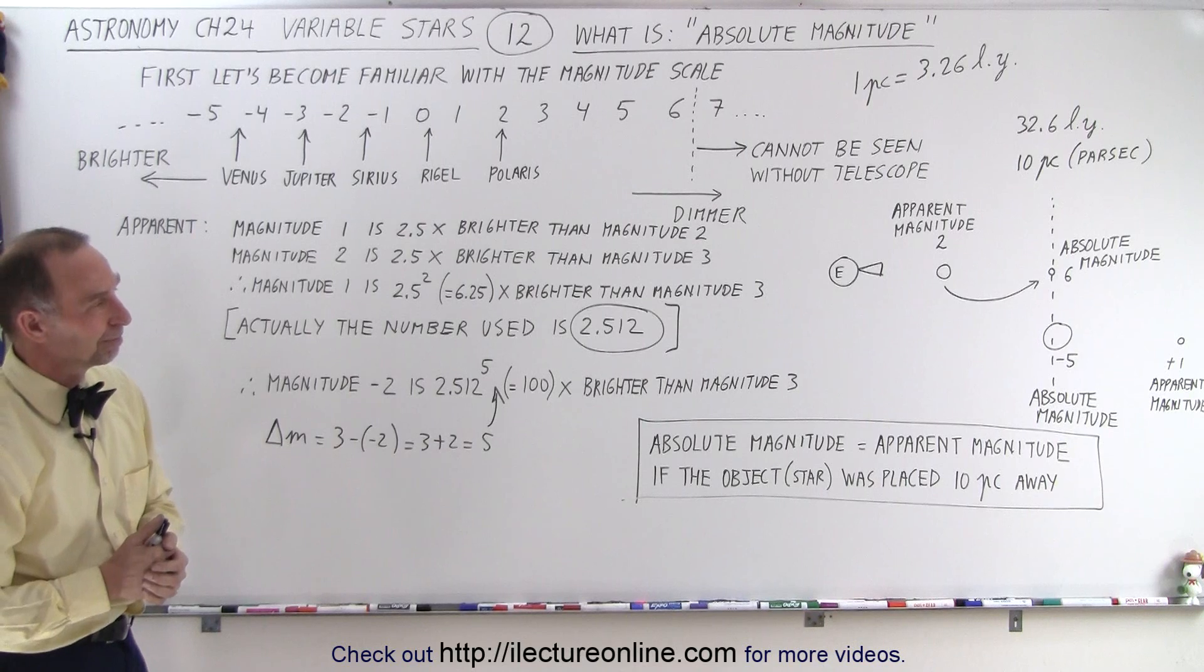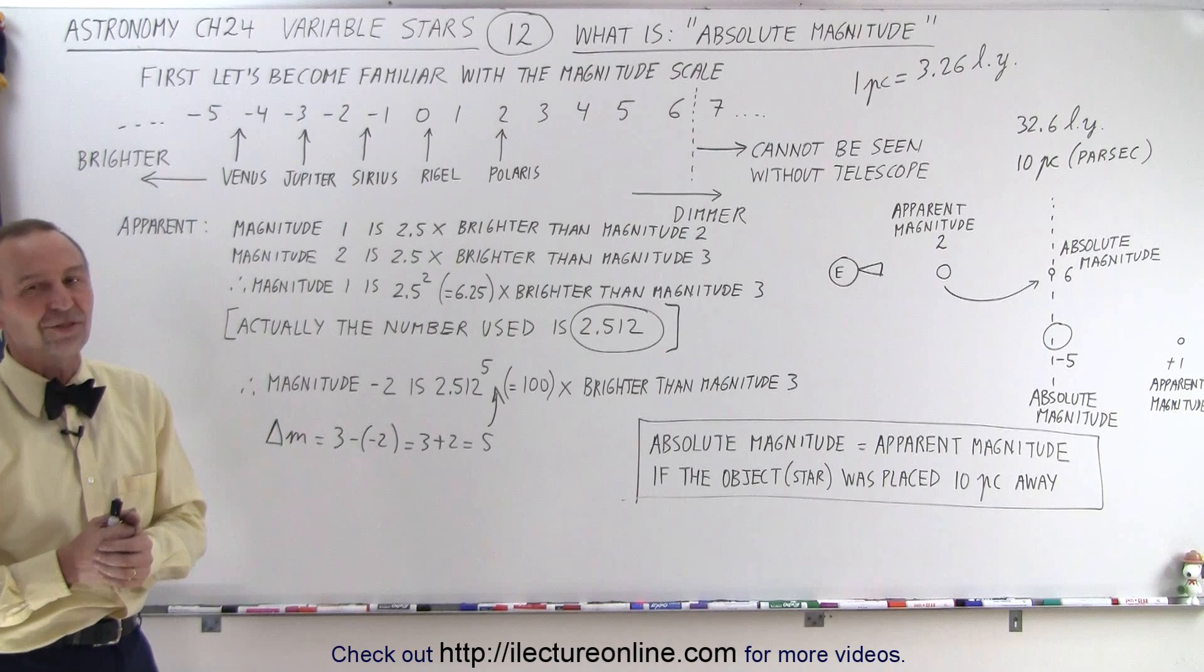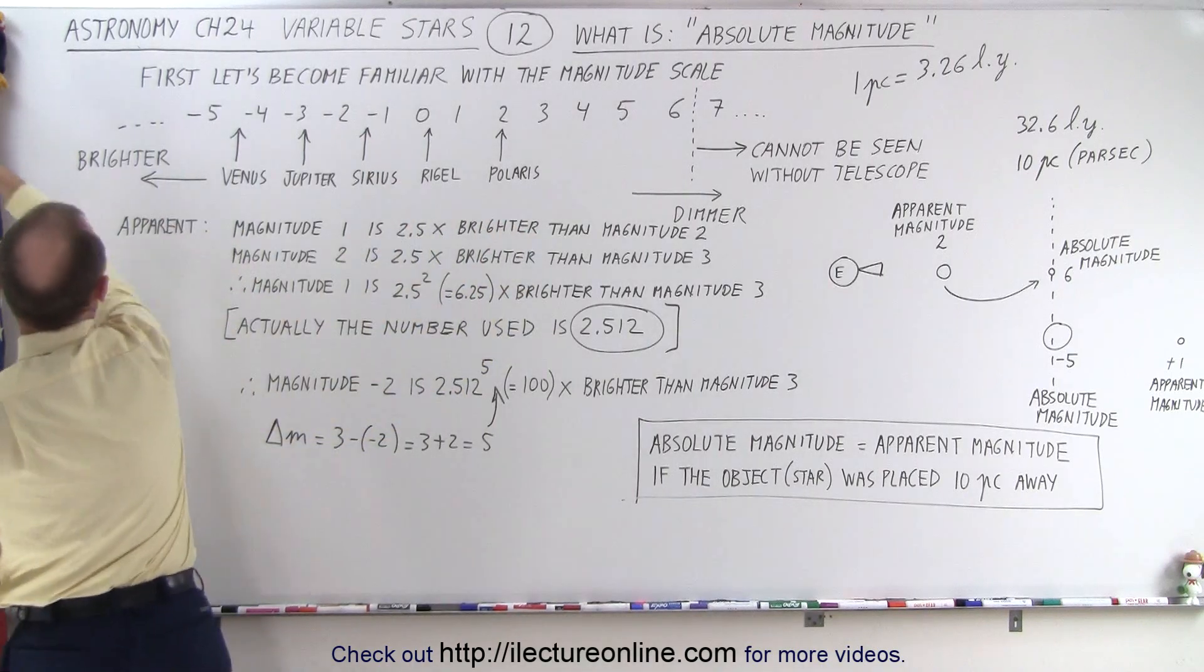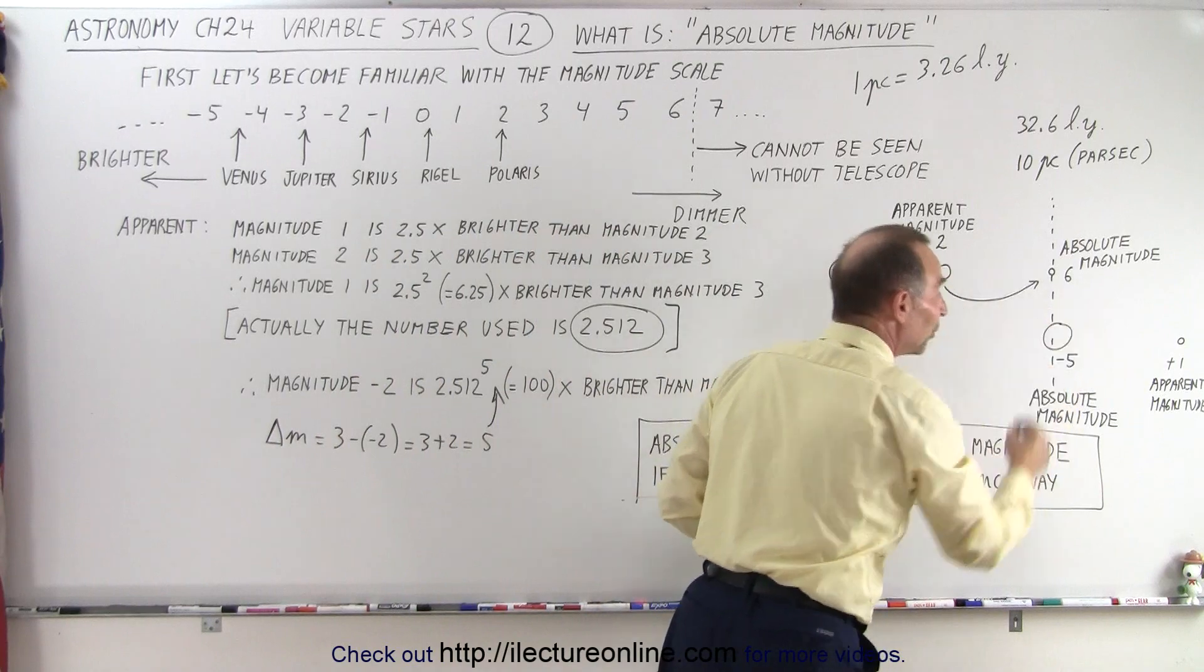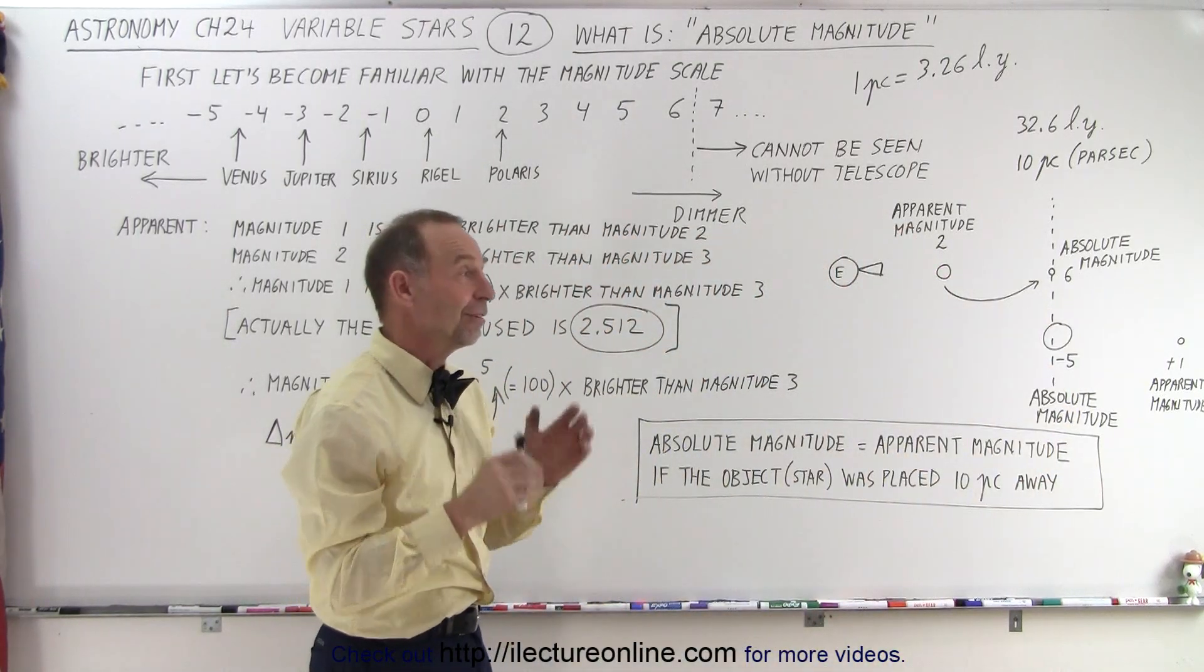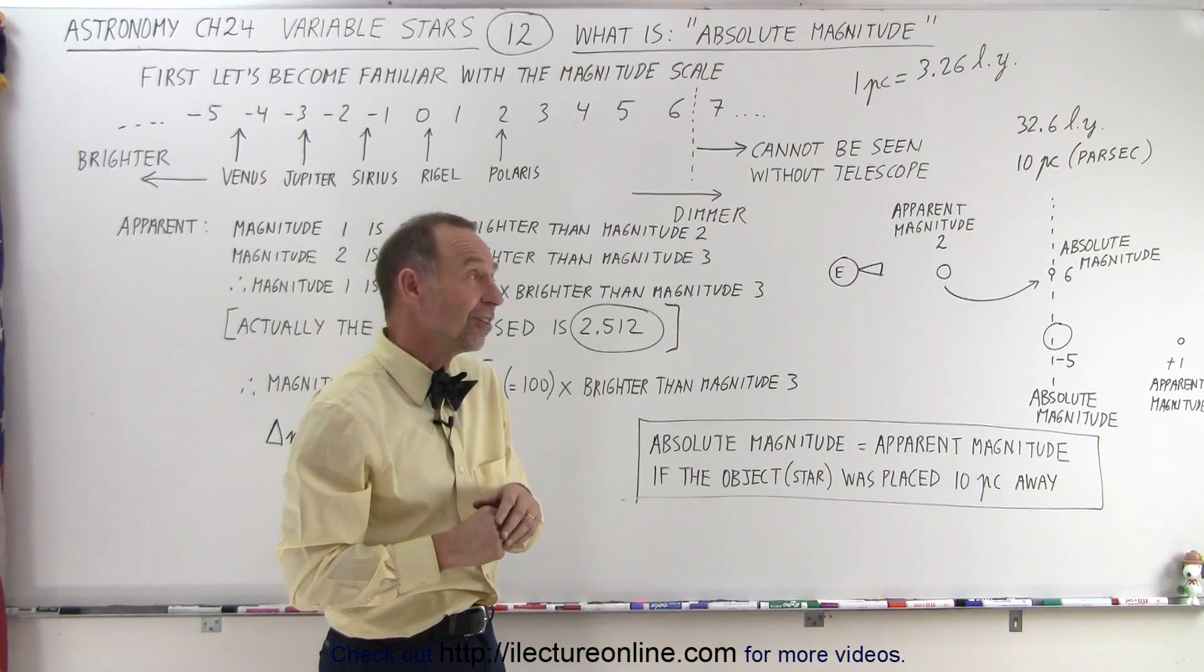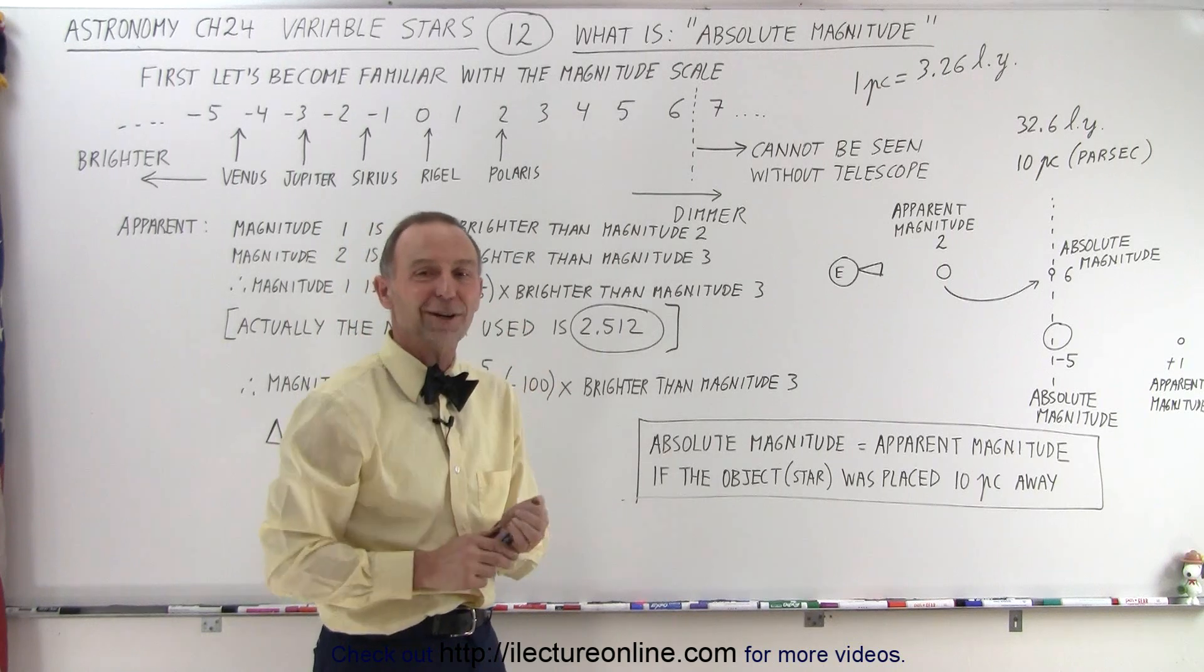What would the sun be? The sun's apparent magnitude is a minus 26 and a half. So it's really bright, of course. So it would be way over that way because it's really close. Now, if we were to put the sun over here, it would be a plus 4.85, almost a plus 5. So if our sun was placed 10 parsecs away, you could barely see it under good circumstances. So our sun is not particularly a bright star. It's a little bit bigger than the average, but not a particularly bright star.